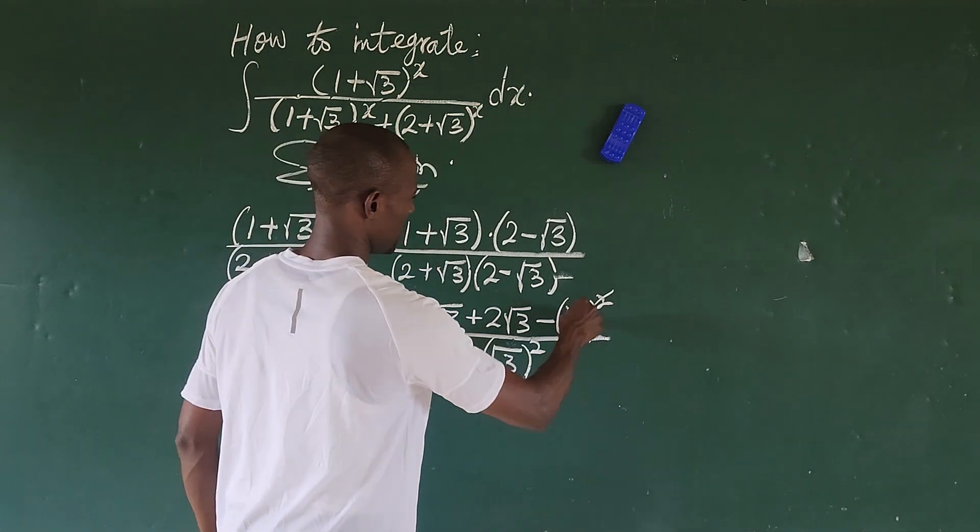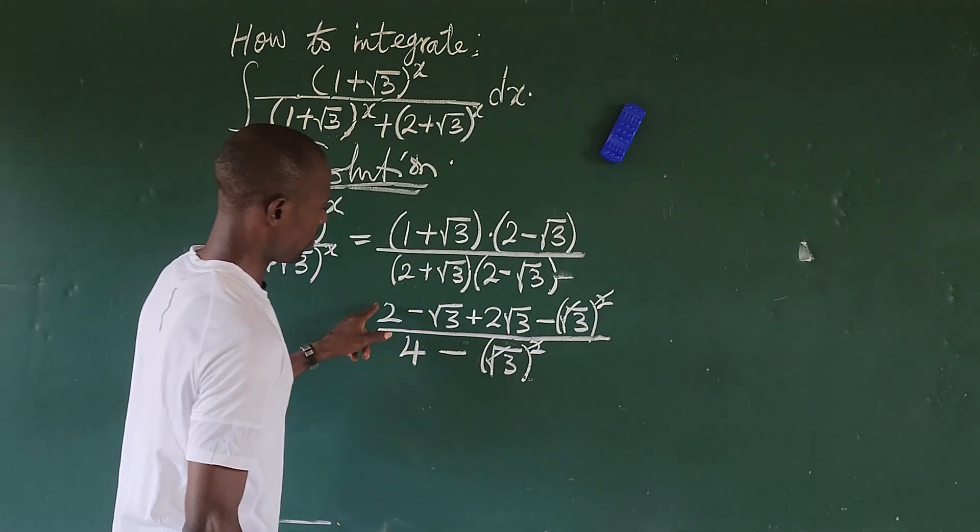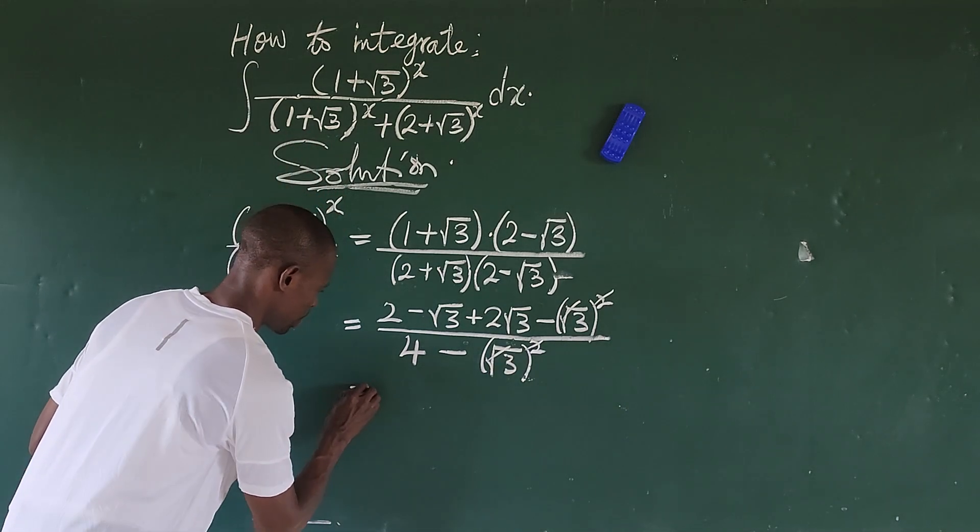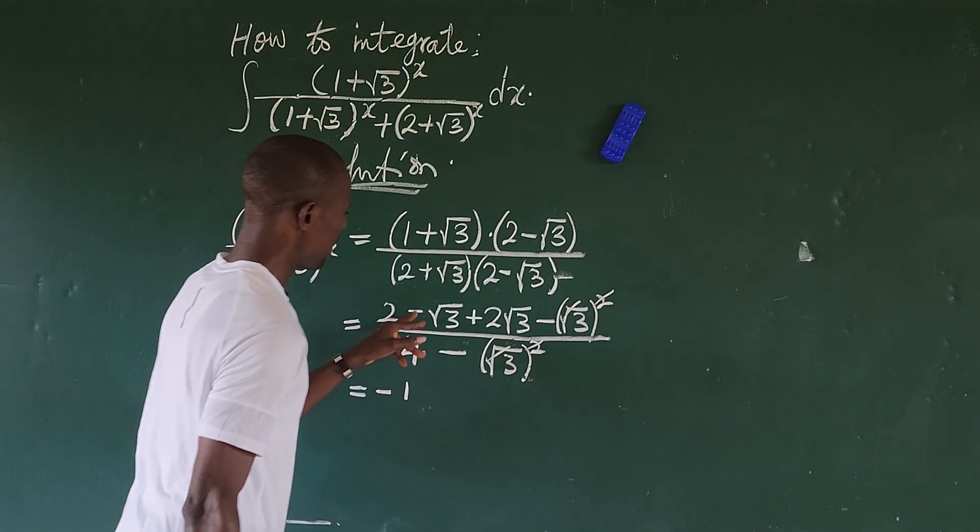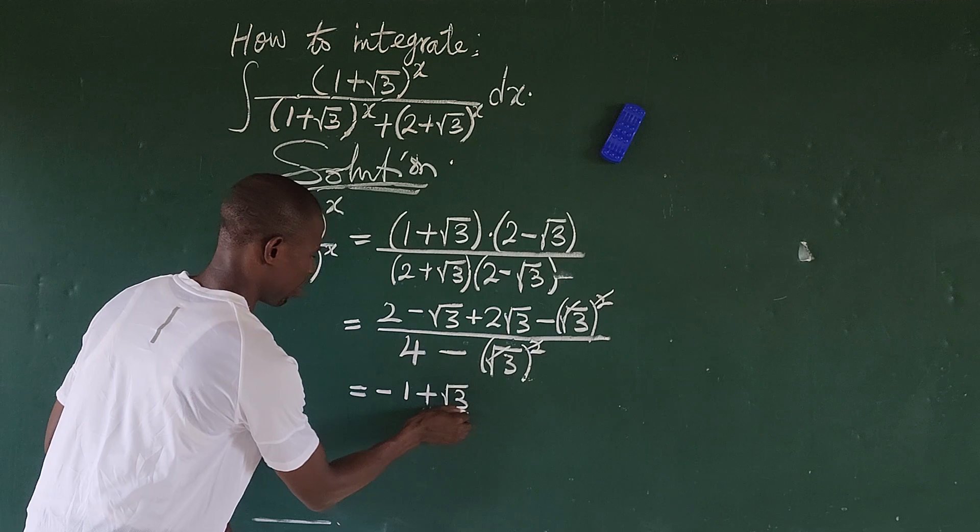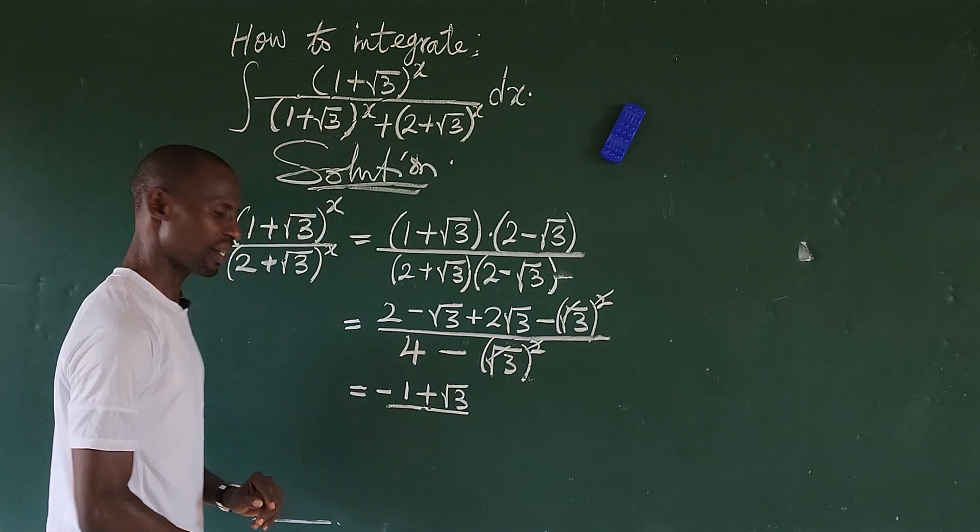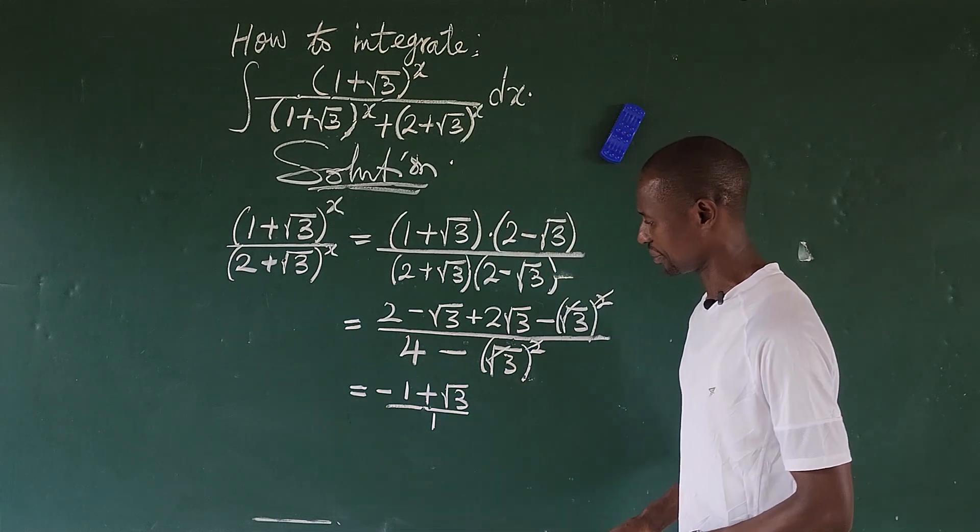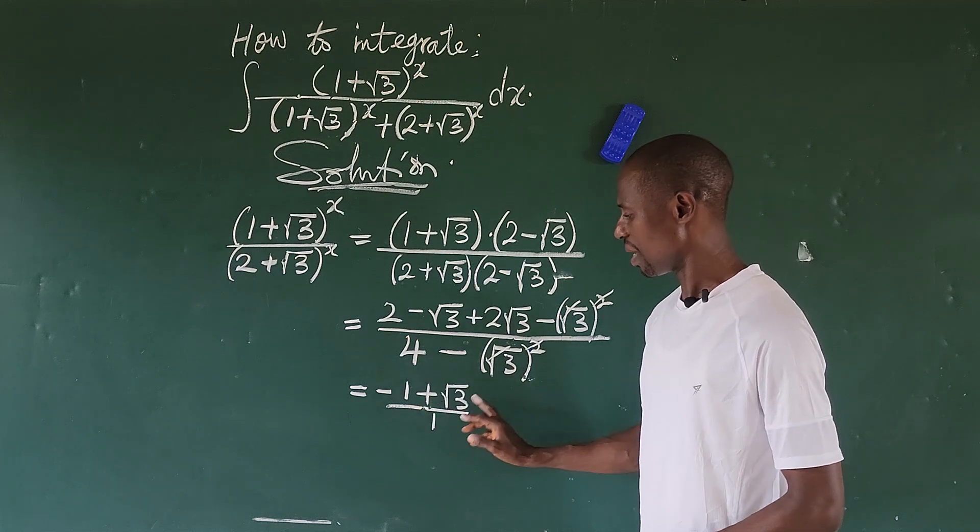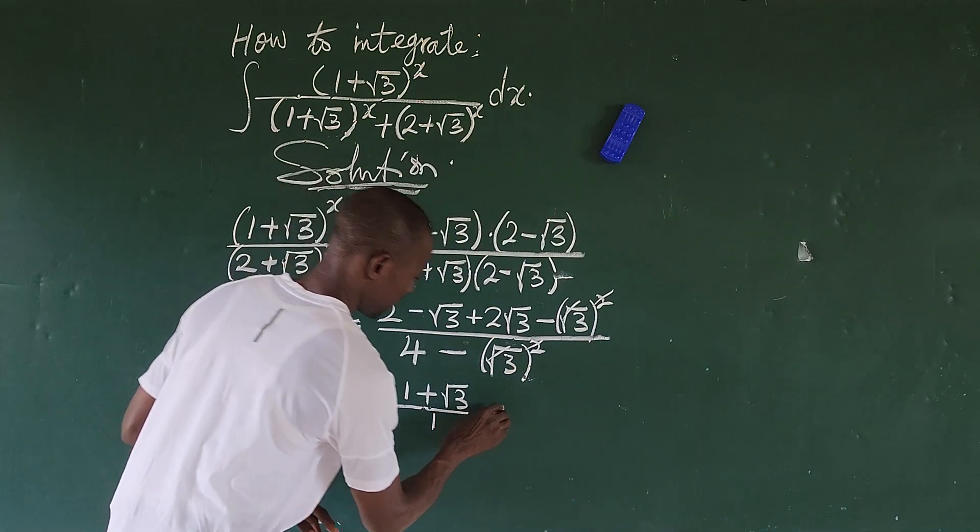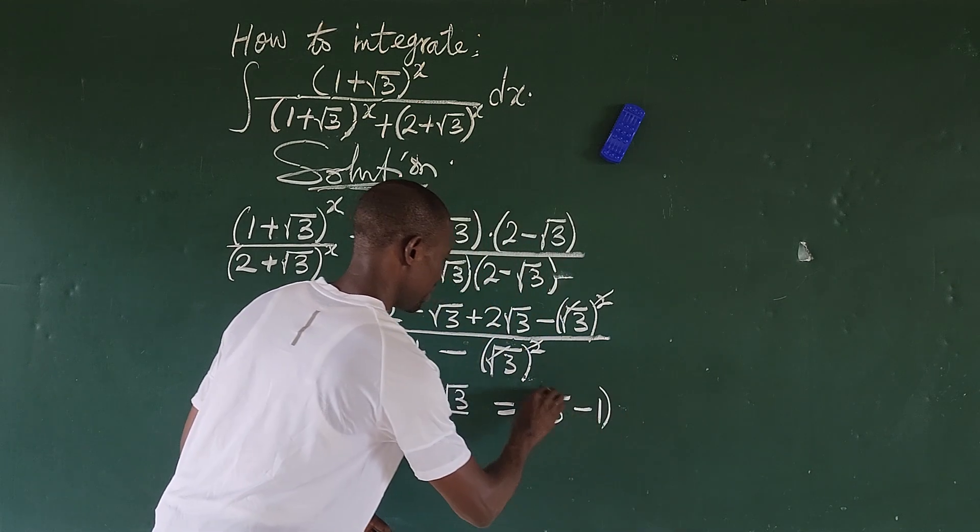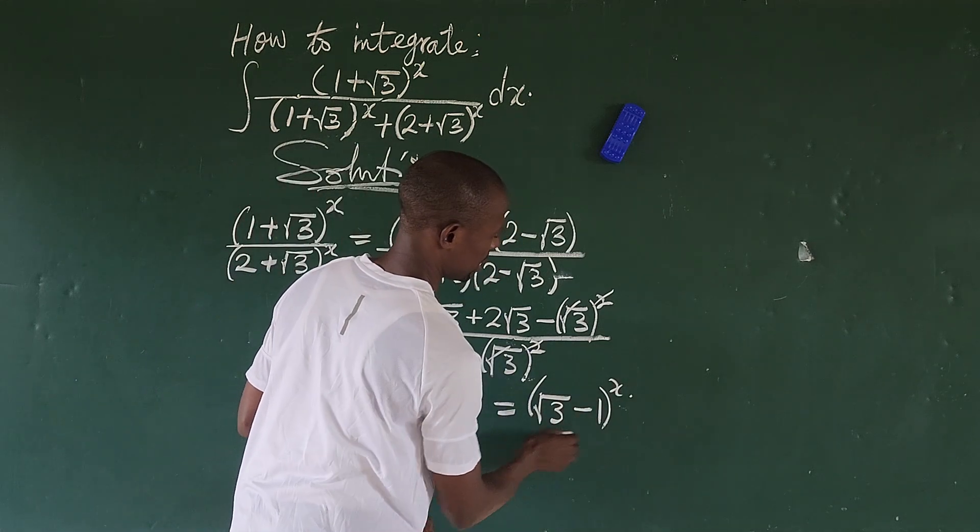So this goes with this and this goes with this. We can add this and this, so plus 2 minus 3 will give us minus 1. Then minus √3 plus 2√3 that will give us plus √3. Then all over 4 minus 3 will give us 1. Now look at what we have here. Because here we are having a minus 1 and here we have a plus sign, I can rewrite this by bringing this to this side. So this could be written as √3 minus 1 to the power of x.